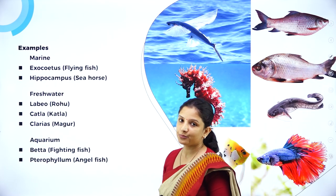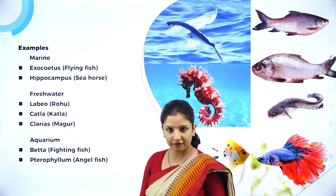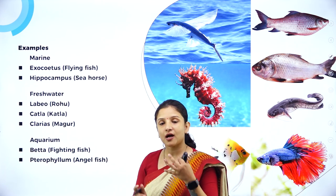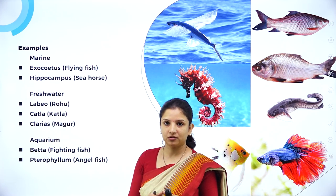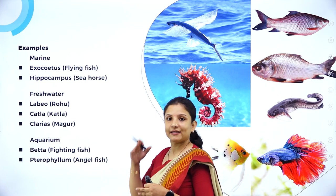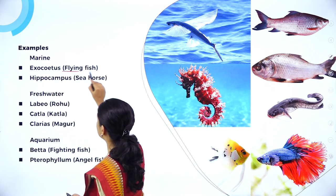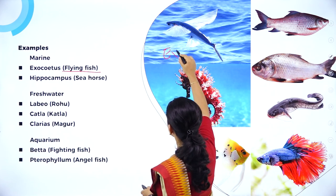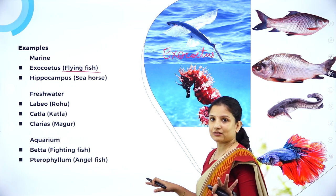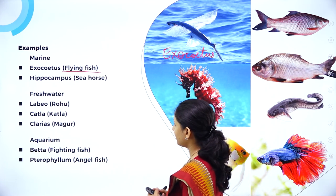Let us look at some examples under class Osteichthyes. There are marine fishes, freshwater fishes, and fishes kept for ornamental or aquarium purposes. Among marine fishes, there is Exocoetus, which is the flying fish. You can see how it can spread its fins just like wings, allowing it to fly a short distance above the water — hence the name flying fish.